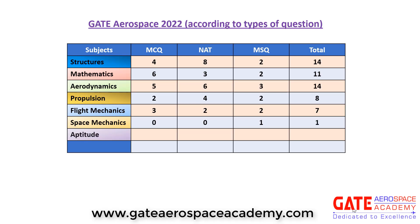From aptitude, the pattern is usually fixed. They ask total 10 questions from aptitude, and all 10 questions were MCQ type — no NAT, no MSQ. So total questions in aptitude, as usual, were 10. Overall in GATE Aerospace 2022, total MCQ questions were 30, total NAT were 23, and total MSQ type questions were 12.